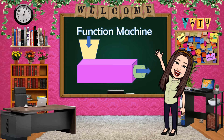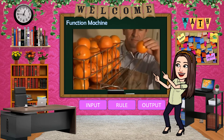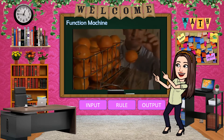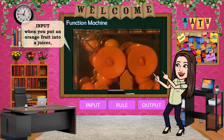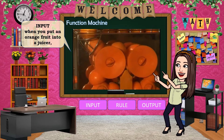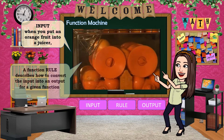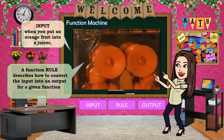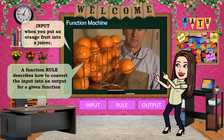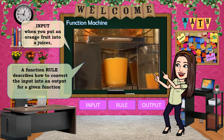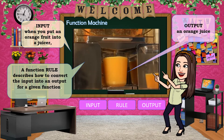A function can be illustrated as a machine where there is input and output. The function machine is a way of thinking about three aspects that make up a function: the input, the rule, and the output. For example, when you put an orange fruit into a juicer, the orange fruit is the input. The rule is the process being done by the juicer — it describes how to convert the input into an output. After the process, you expect a product as output. In this example, you expect an orange juice as the output and not a grape juice.